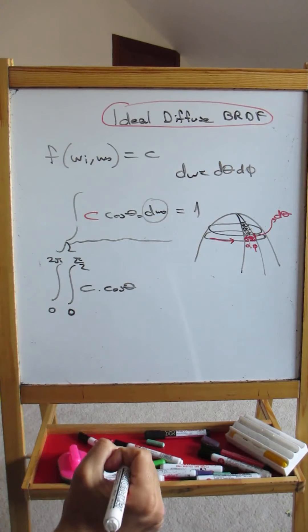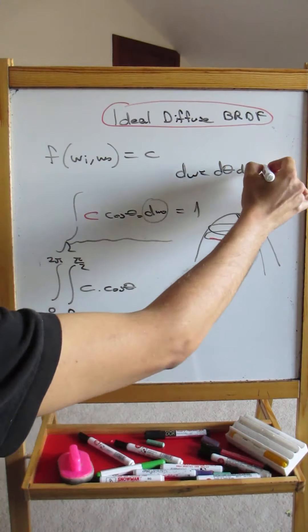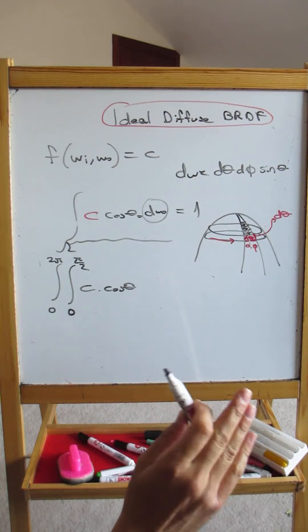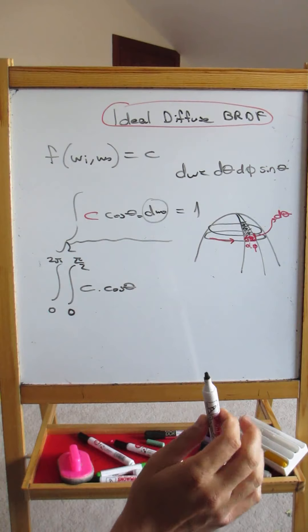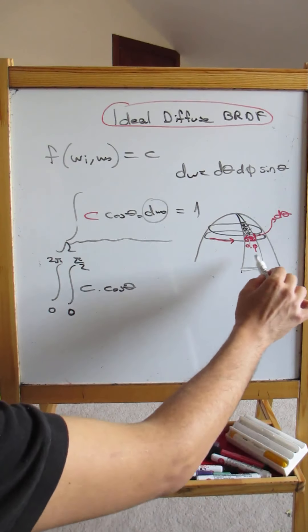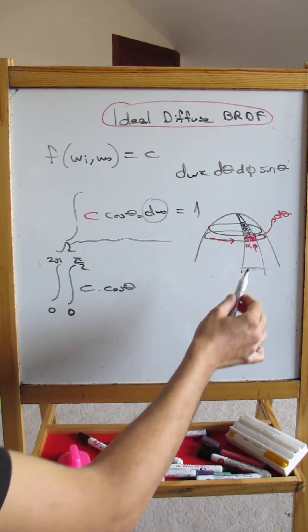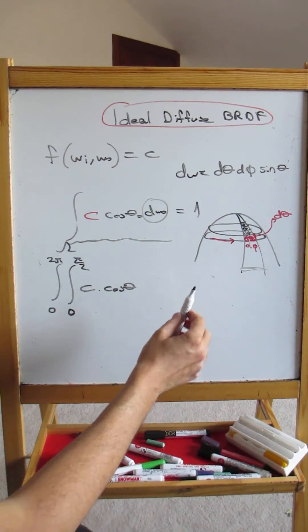It's defined as d theta, d phi, but there is a reduction factor. And this reduction factor is proportional to sin theta. So sin theta, sin, think about it, sin 90 degrees, sin 90 is one. So at the equator, this is the maximum value.